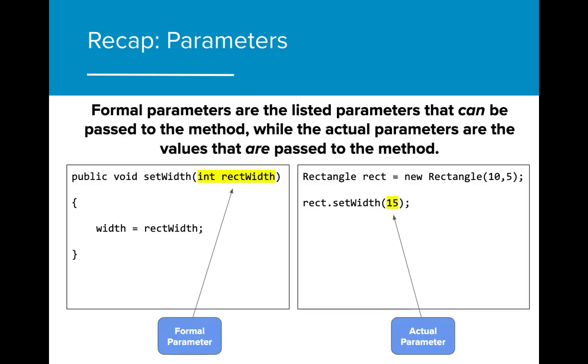When writing a new method signature, the parameters that we include in the method signature are referred to as the formal parameters. When we input real values into the parameter list, those real values are referred to as actual parameters.